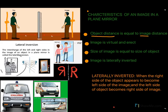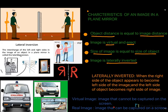To summarize the characteristics of a plane mirror: object distance equals image distance, the image is virtual and erect, the size of the image equals the size of the object, and the image is laterally inverted. A virtual image is one that cannot be captured on a screen, like the image formed in a plane mirror.